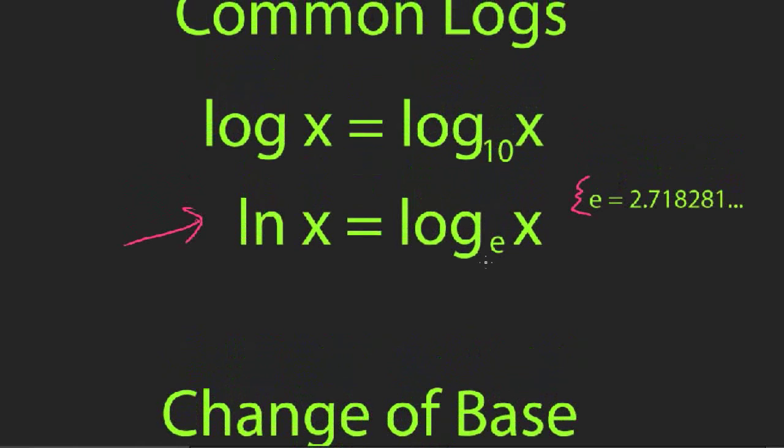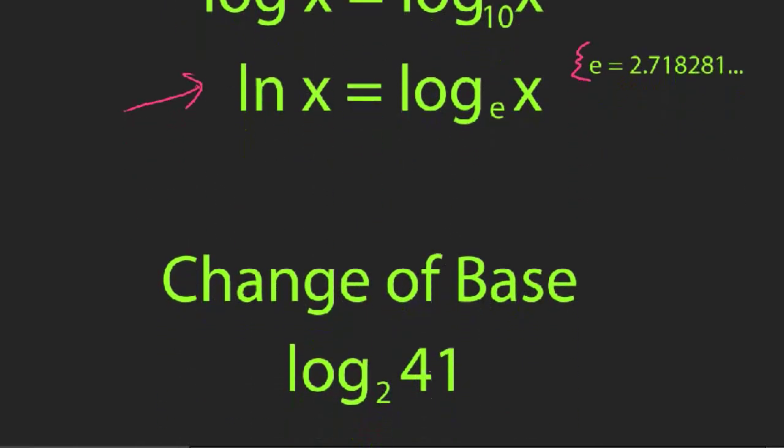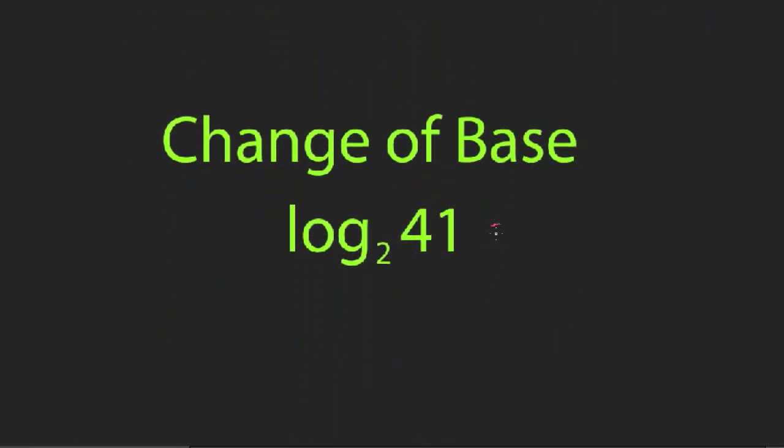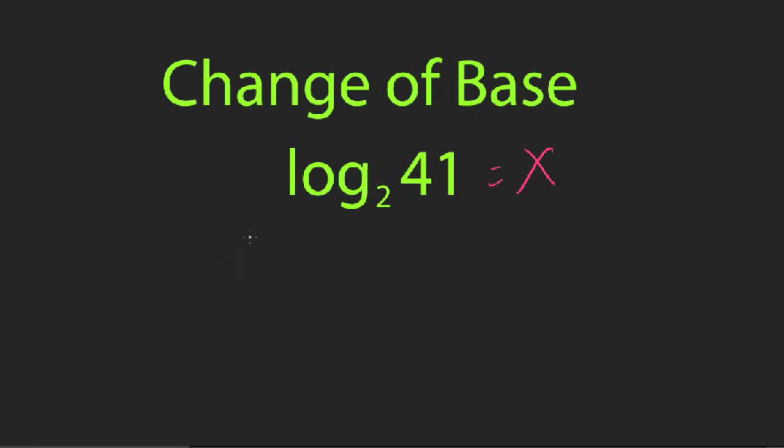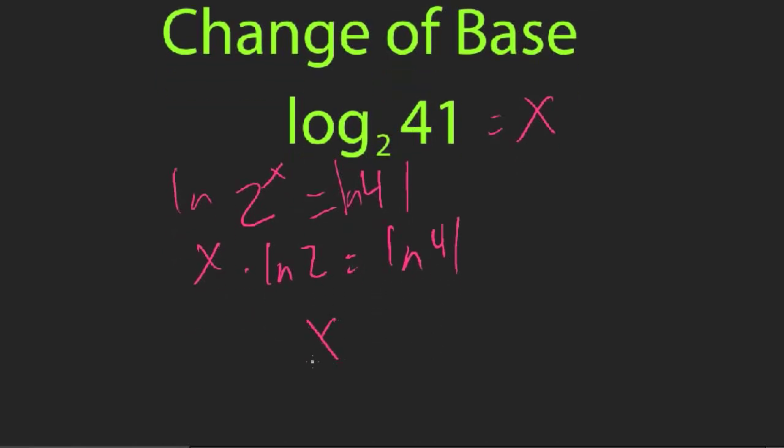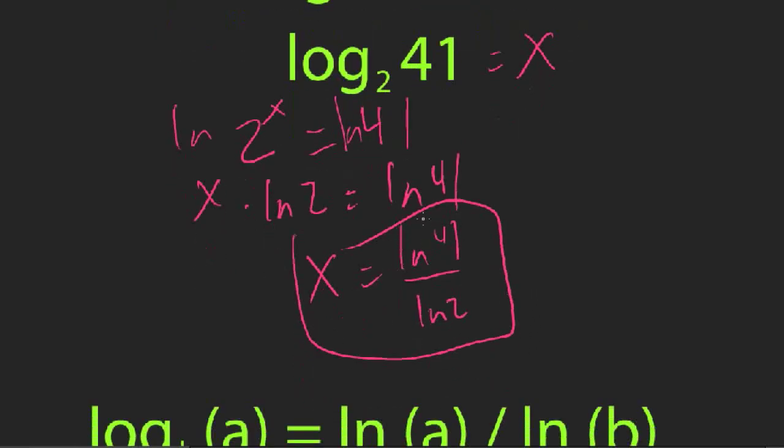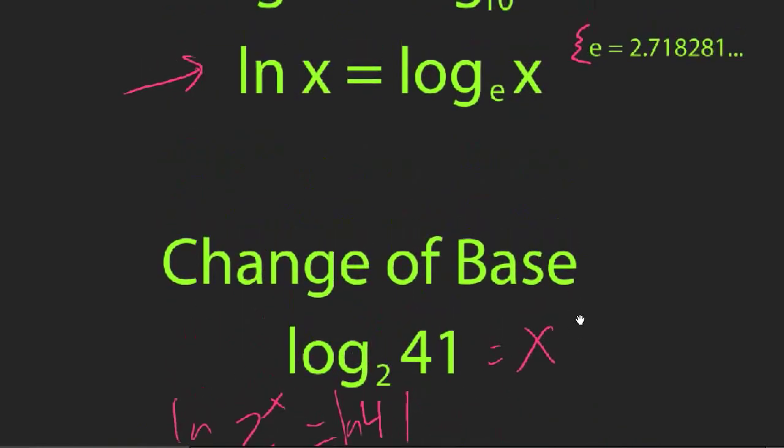So suppose these are so common that sometimes your calculator only has a natural log button. It doesn't have a log base 2 button. So say you wanted to know log base 2 of 41. Well, you're going to use a change of base. This is kind of a trick to get around that. So I'm going to set this equal to x. Use the heart method. 2 to the x equals 41. Now I'm going to take the natural log of both sides, assuming that the natural log is the button you have on your calculator. And now I take the exponent down in front. I get x times ln of 2 equals ln of 41. And now x is just ln of 41 over ln of 2. So that's how you can use change of base to actually calculate this with a calculator that maybe only has an ln button.